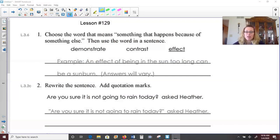To go ahead and get started, let's look at number one. Choose the word that means something that happens because of something else. Would this be demonstrate, contrast, or effect? Well, I know you've talked about cause and effect before. So an effect is something that happens due to something else taking place. They use the example, an effect of being in the sun too long can be a sunburn.